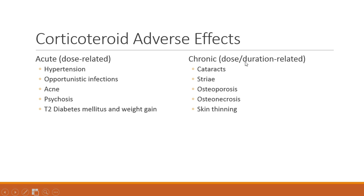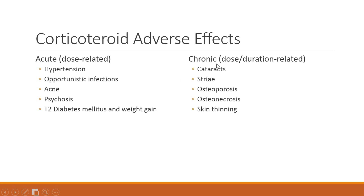We also have chronic or dose- and duration-related side effects. If you do a little reading on Cushing's disease, you'll notice these symptoms look awfully similar to those seen in a person with Cushing's — because in Cushing's disease there is an overproduction of cortisol leading to all these effects. In chronic administration of this drug, it's almost as though you have increased cortisol levels in the system, and the effects resemble those seen in a Cushing's patient. Side effects include cataracts, striae, osteoporosis, osteonecrosis, and skin thinning. Thank you very much.